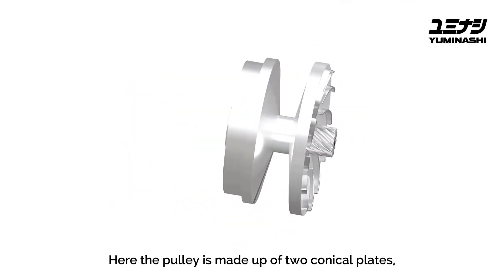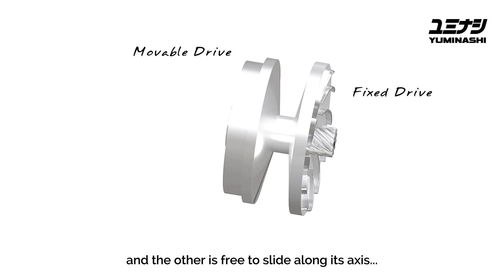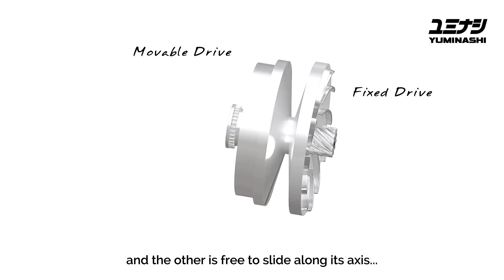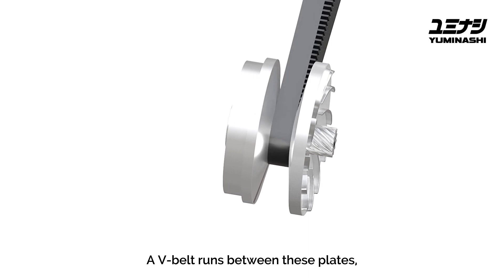In the variator assembly, the pulley is made up of two conical plates. One of them is fixed to the input shaft, and the other is free to slide along its axis. A V-belt runs between these plates.